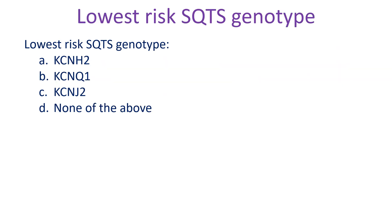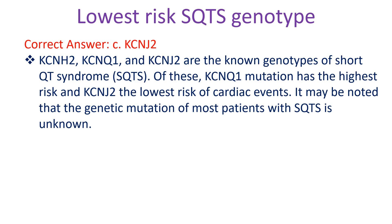Lowest risk SQTS genotype. A: KCNH2, B: KCNQ1, C: KCNJ2, D: none of the above. Correct answer C: KCNJ2. KCNH2, KCNQ1, and KCNJ2 are the known genotypes of short QT syndrome. Of these, KCNQ1 mutation has the highest risk and KCNJ2 the lowest risk of cardiac events. It may be noted that the genetic mutation of most patients with SQTS is unknown.